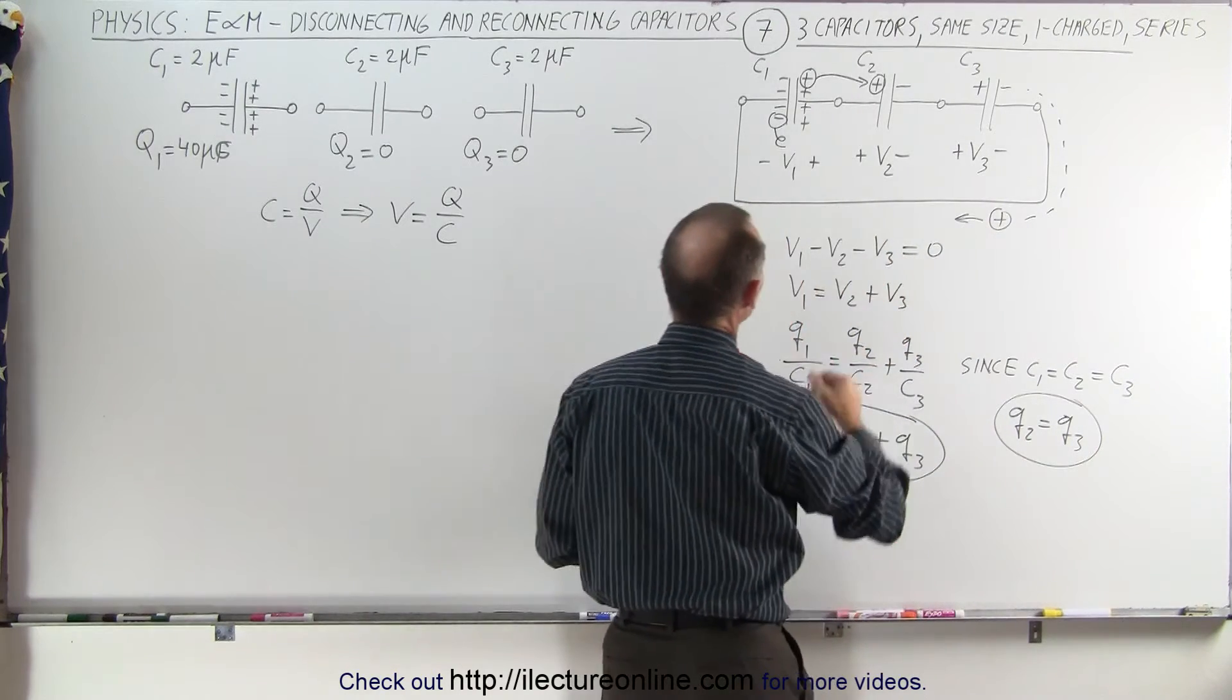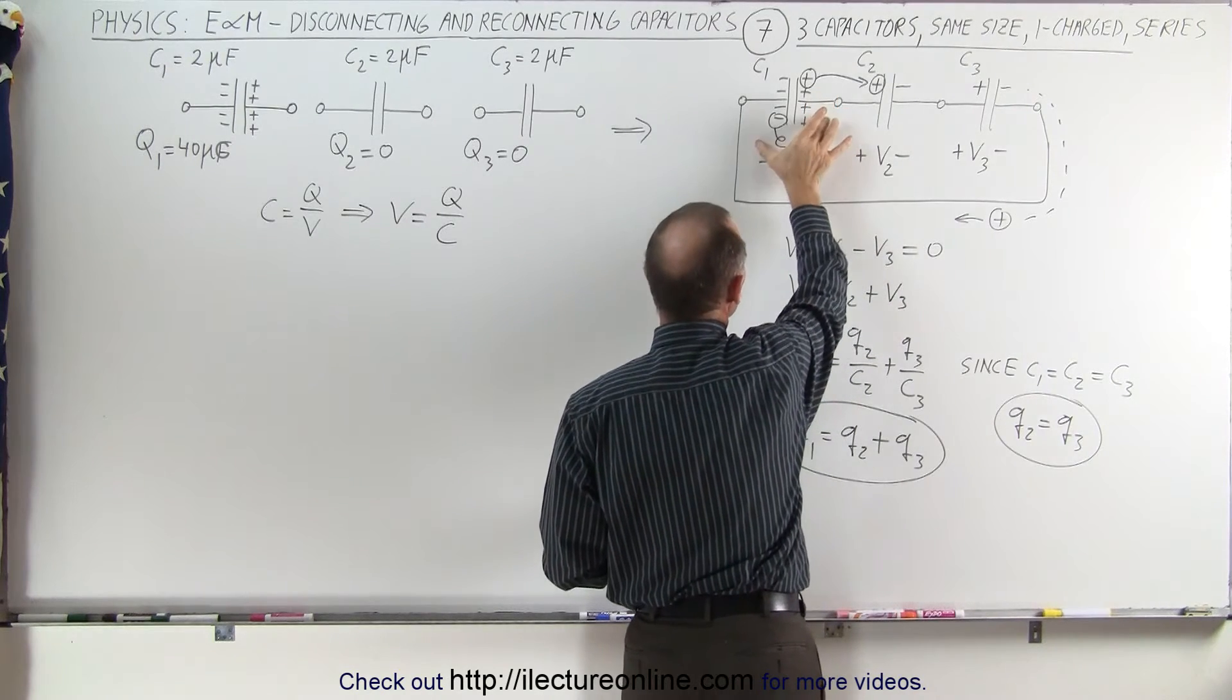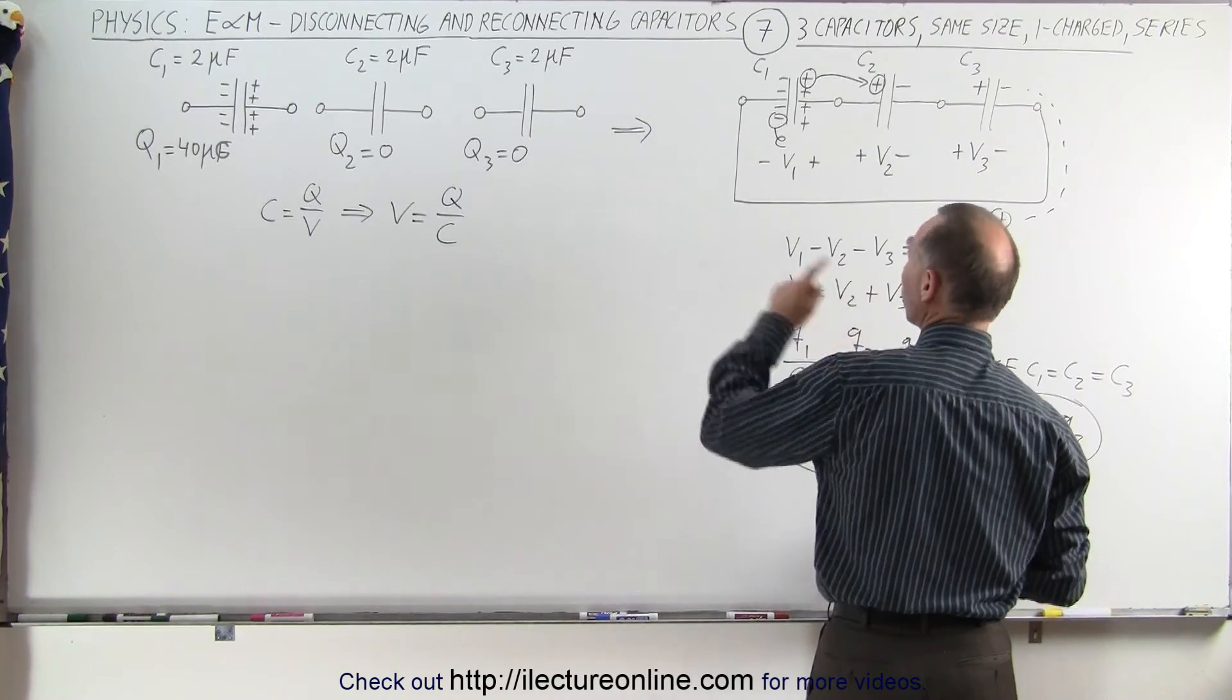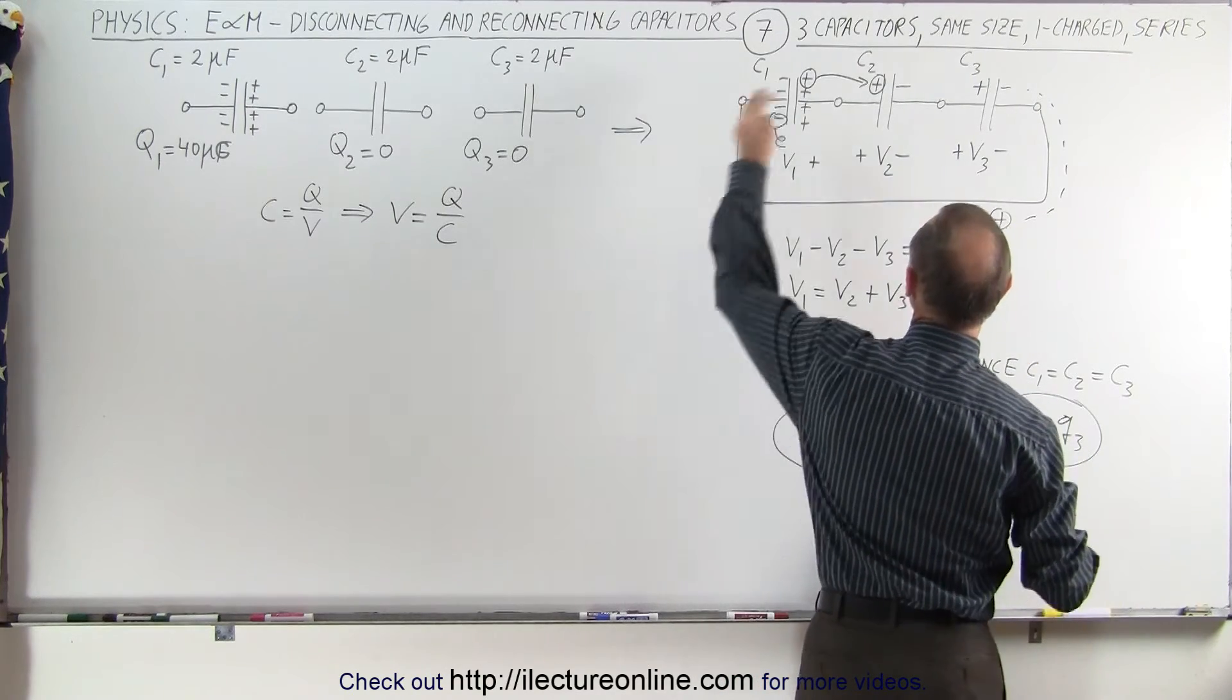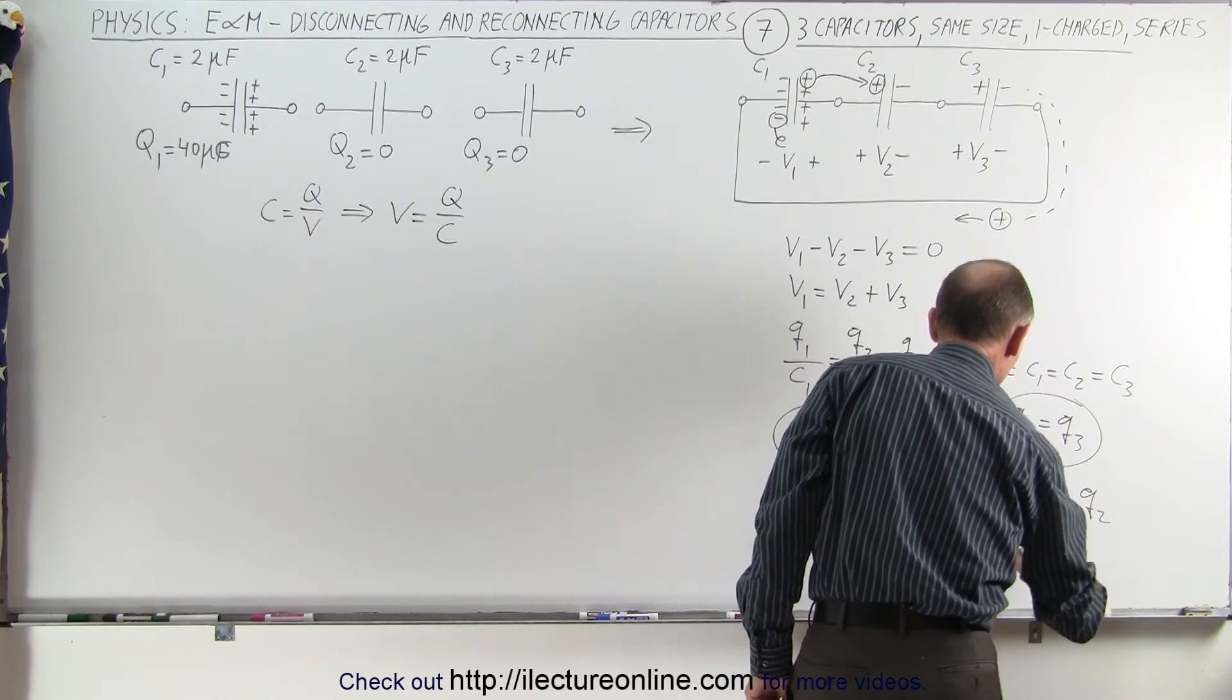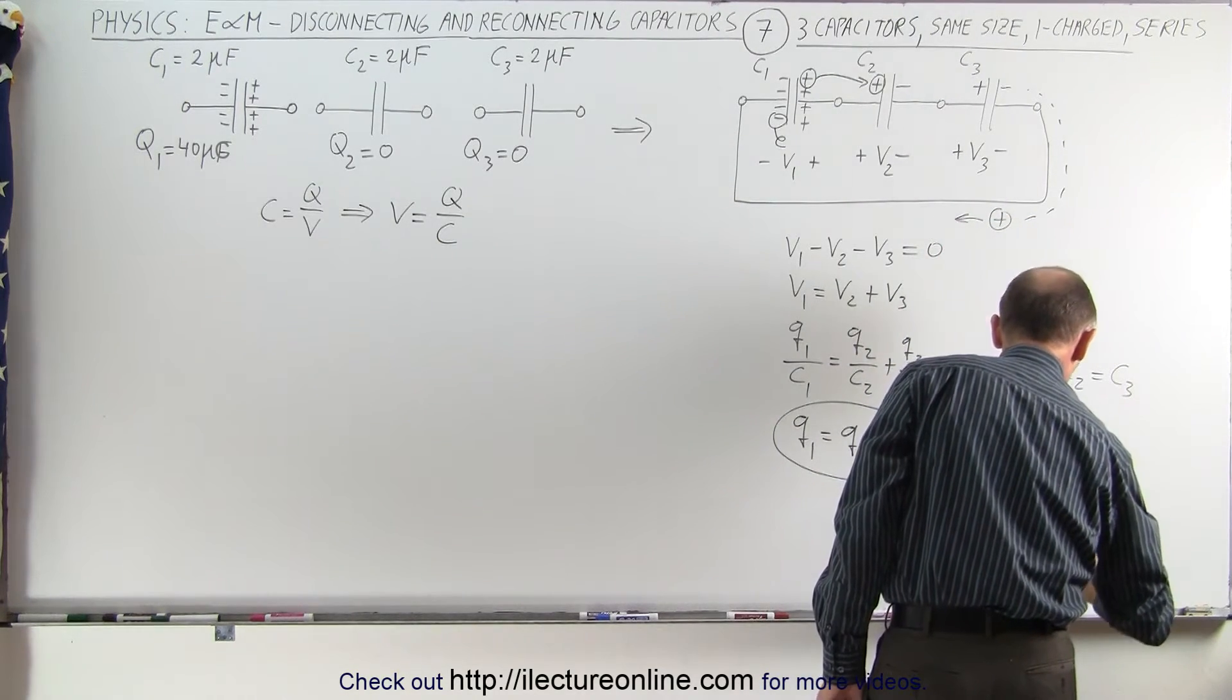And we can also say that Q1 or C1 will end up with the amount of charge equal to the original charge minus the charge that went to C2. In other words, Q1 will equal the original charge, which is big Q1, minus the charge that went to C2, which is Q2. Therefore, we can write that Q1 equals 40 minus Q2.